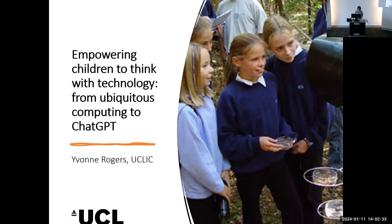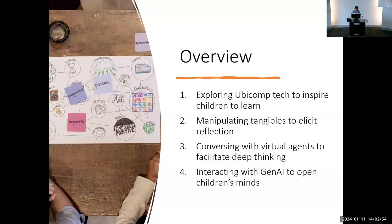I'm going to talk today about some of my research which started 20 to 30 years ago, and then move through to see what common themes there are and what challenges we face today. This is a picture of one of my first projects called Ambient Wood, where a group of girls are looking at a video — not in the classroom but outdoors in the woodland — in a strange-looking contraption called a periscope. I'll start by talking about how we used ubiquitous computing to inspire children to learn, then talk about physical computing and tangibles, then move to recent research on virtual agents and assistants, and finally speculate about how we might move beyond the discourse about generative AI and cheating to how we might use it to open children's minds.